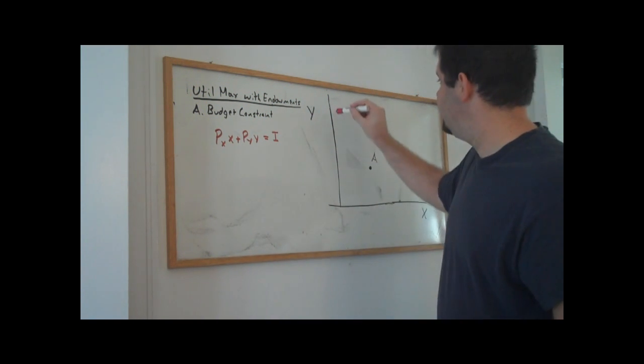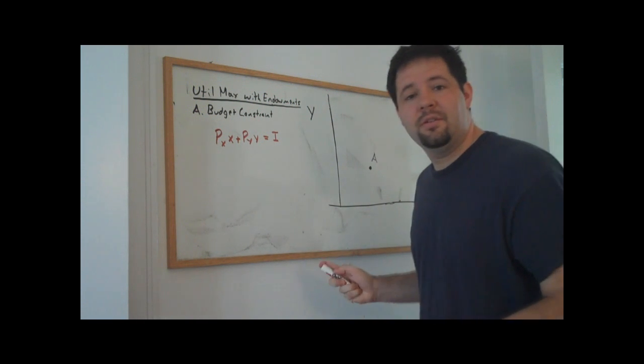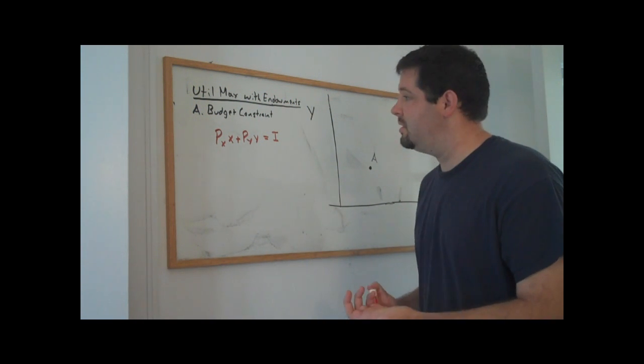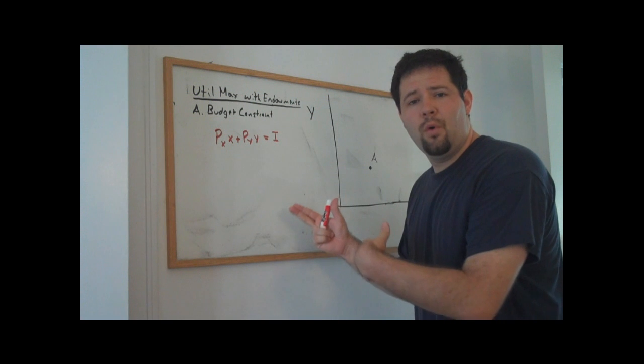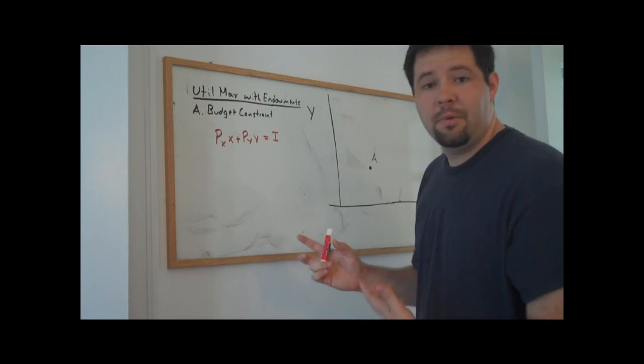We get two points on the axes, and then we connect those two dots, and that's going to be our budget constraint. So that was a pretty straightforward way of understanding where the budget constraint is.